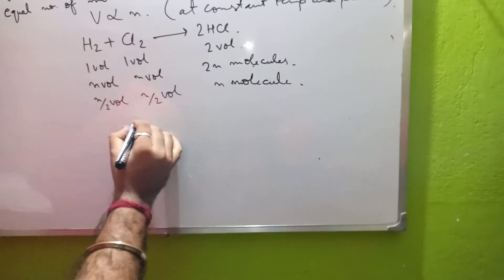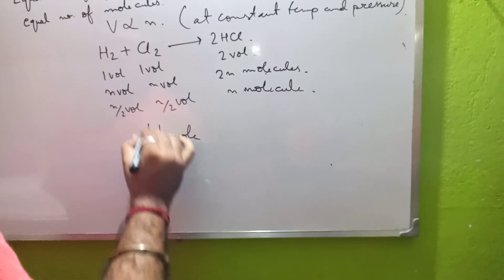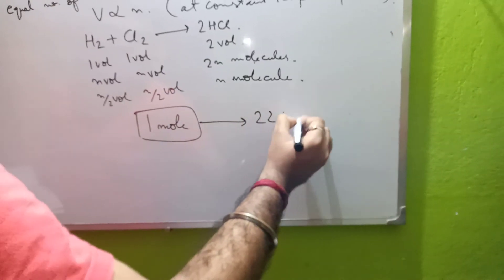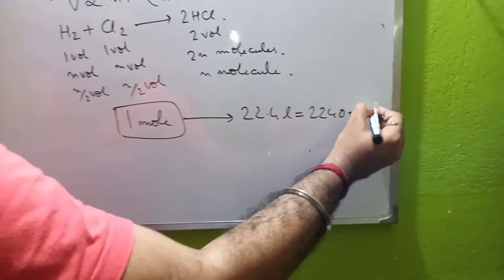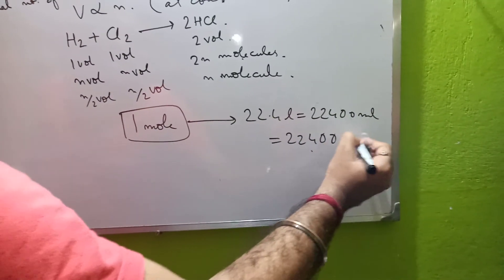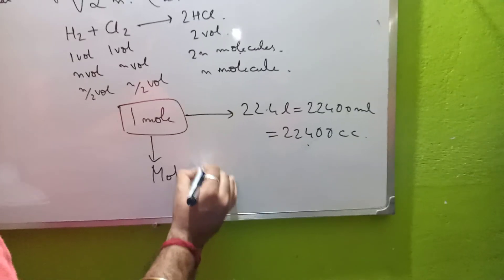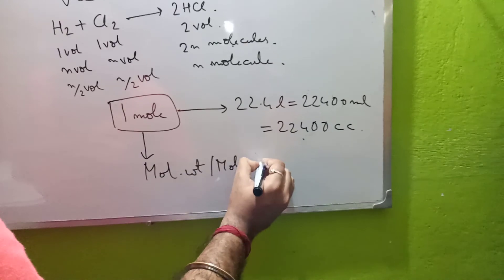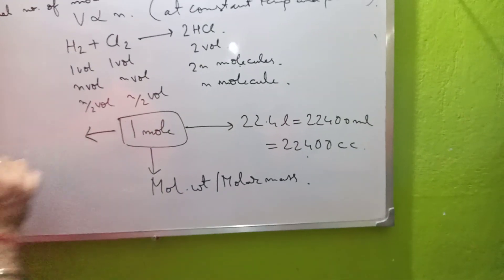We know that one mole contains 22.4 liters, which is equal to 22,400 milliliters or 22,400 cm³. One mole is the molar mass of a substance — which we call molar mass in Class 11.